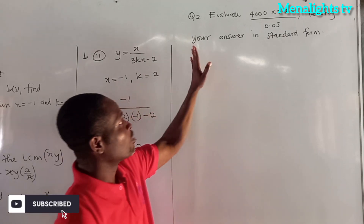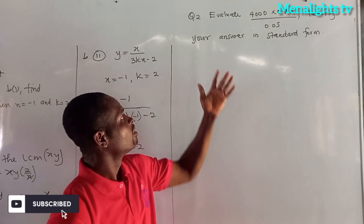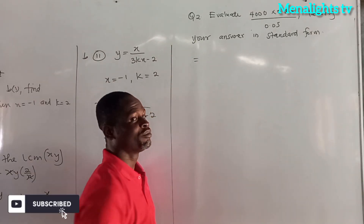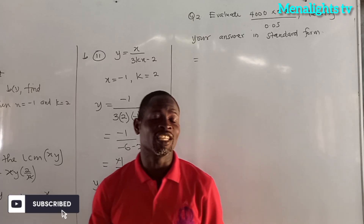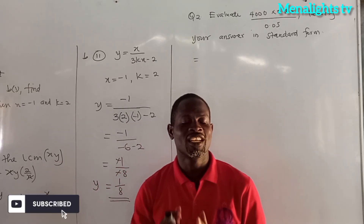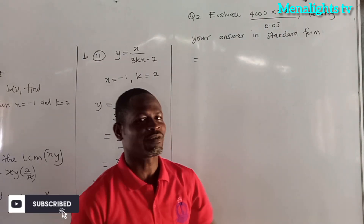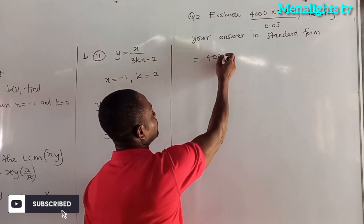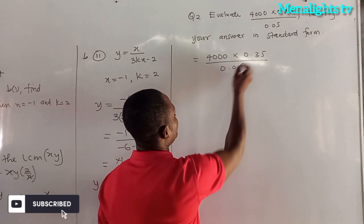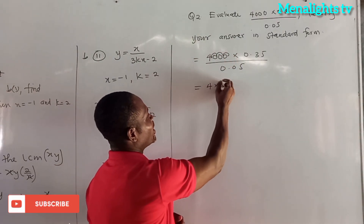So we come to question 2. We have to evaluate 4000 × 0.35 / 0.05, leaving the answer in standard form. In standard form, the number must not be more than 10 and not less than 1. Since 4000 is more than 10, we convert: 4000 = 4 × 10^3.